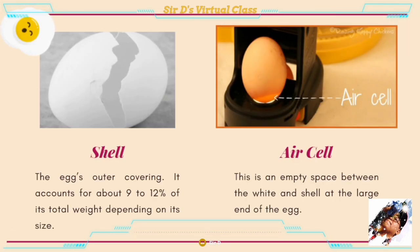Shell: the egg's outer covering; it accounts for about nine to twelve percent of its total weight depending on its size. Air cell: as you can see in the illustration, this is an empty space between the white and the shell at the large end of the egg.